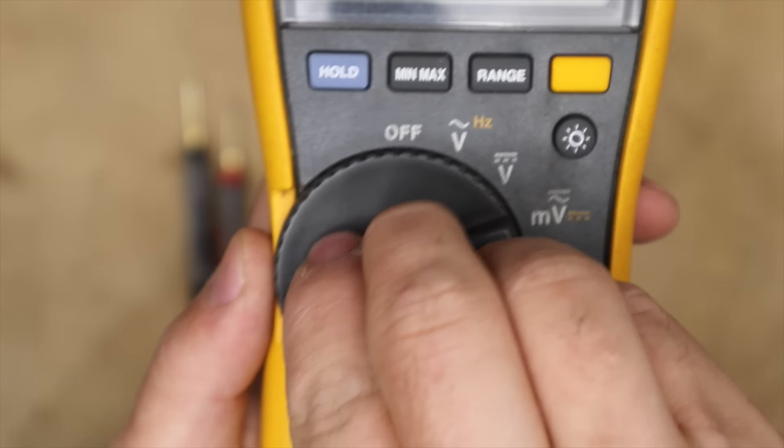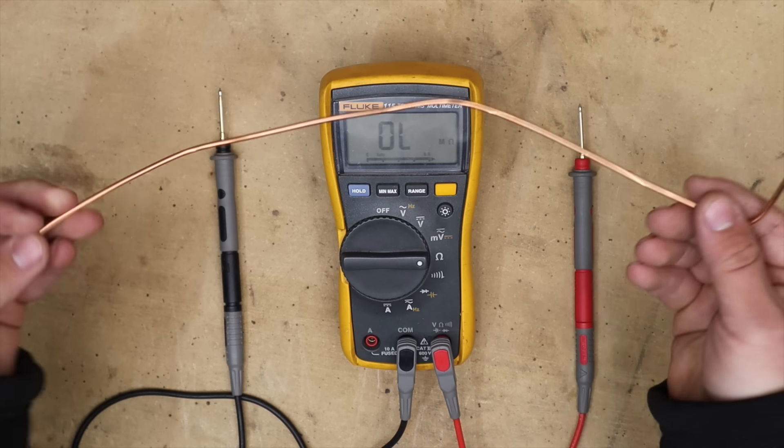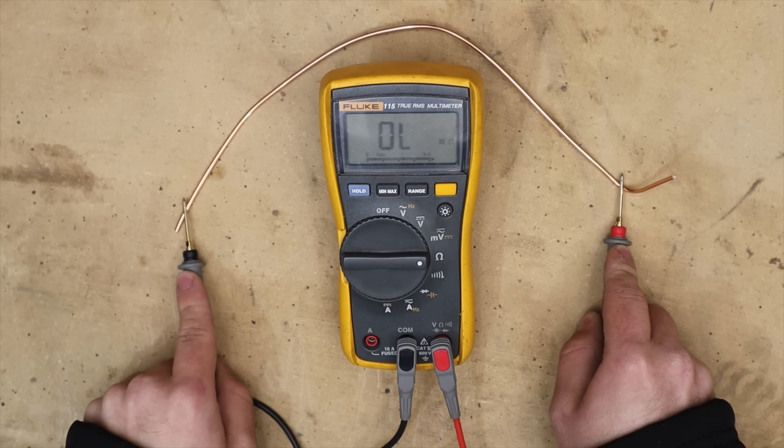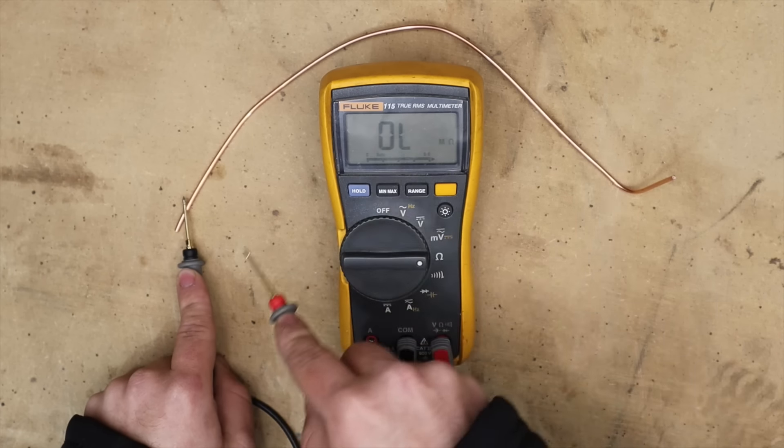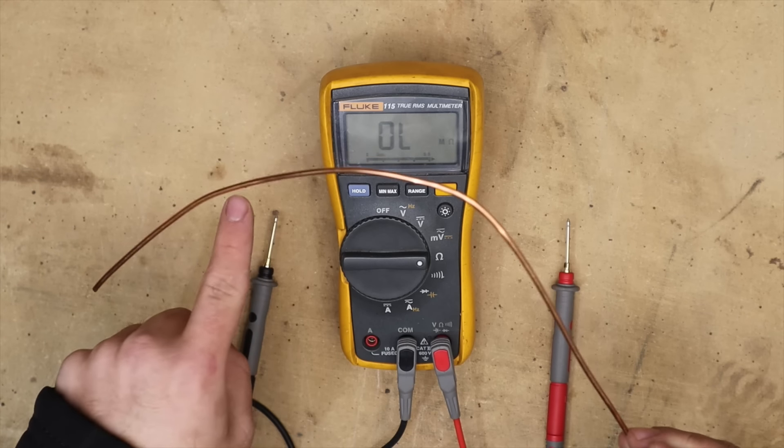Our next feature is ohms. This is a measurement of resistance. Essentially how difficult it is for an electrical current to pass through a material. If we place the probes on a copper wire for example we'll get a resistance of nearly zero. This is because it's very easy for current to flow through the copper wire.